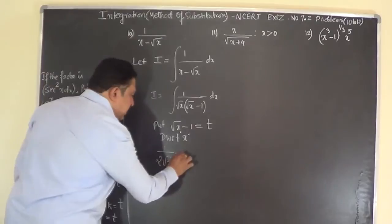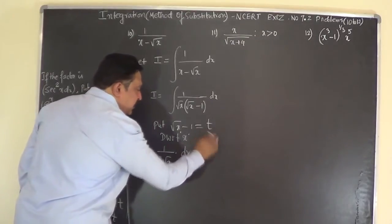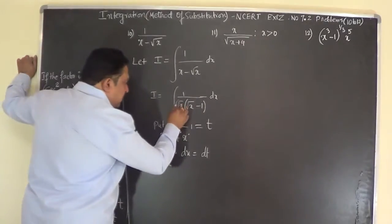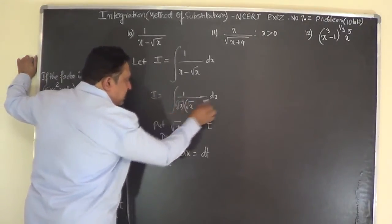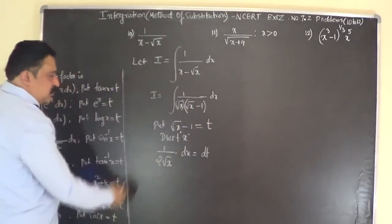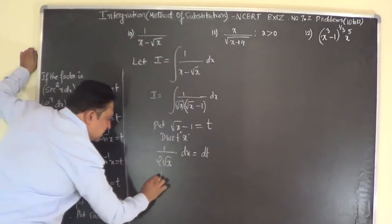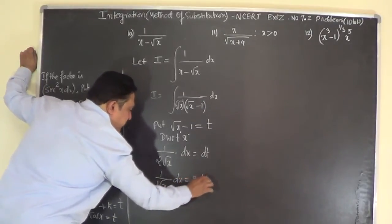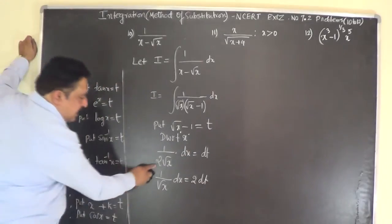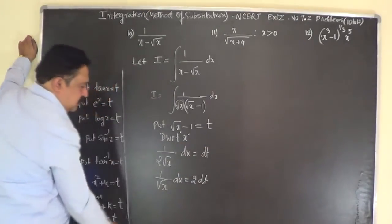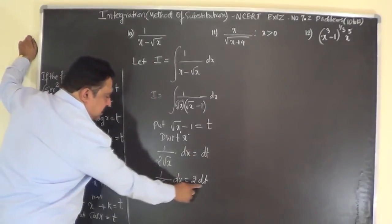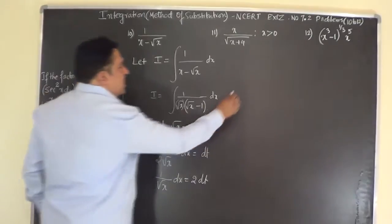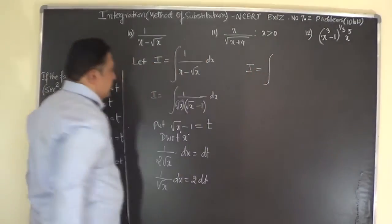This gives dt by dx, so rearranging: 1 over 2√x dx equals dt. But in the problem we have 1 over √x dx, not 1 over 2√x dx, so 1 over √x dx equals 2 dt. By cross-multiplying, we get the replacement factor.